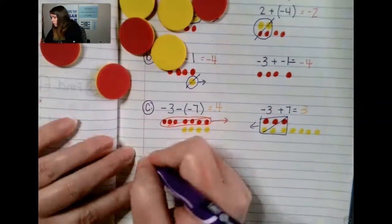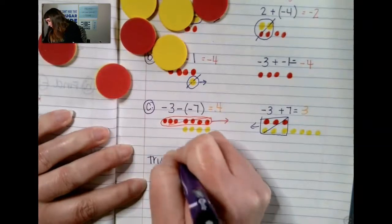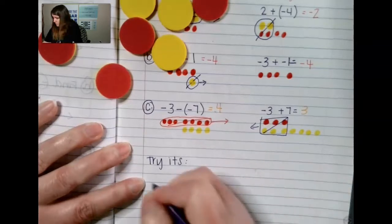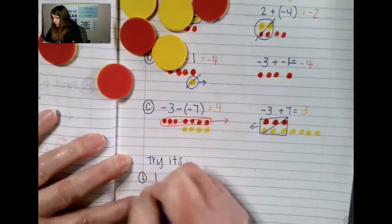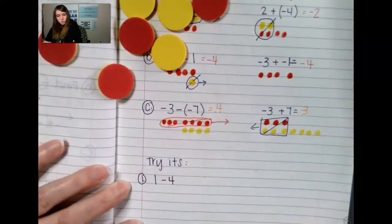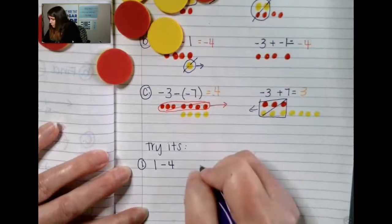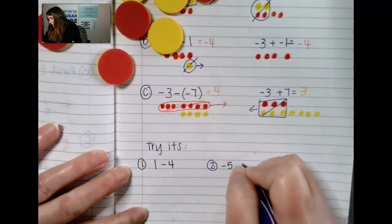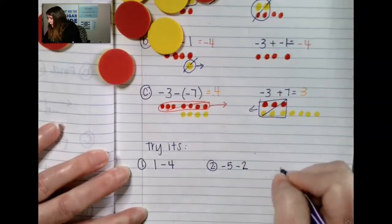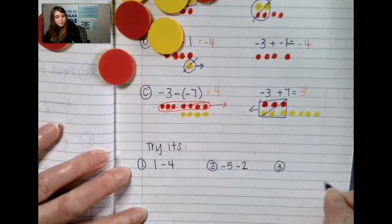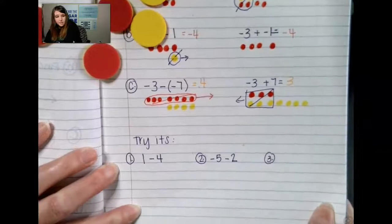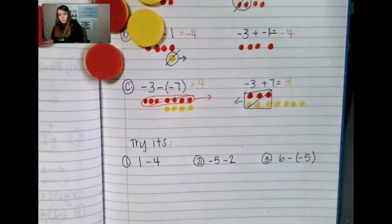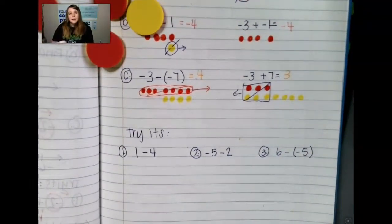It is your turn for a triad. Triad number 1 is 1 minus 4 — show me how to model that one. Triad number 2 is negative 5 minus 2. And triad number 3 is 6 minus a negative 5. Show me how to model subtraction. Go ahead and hit pause right now so you don't hear my voice — I am going to solve these, so when you're ready, come on back.